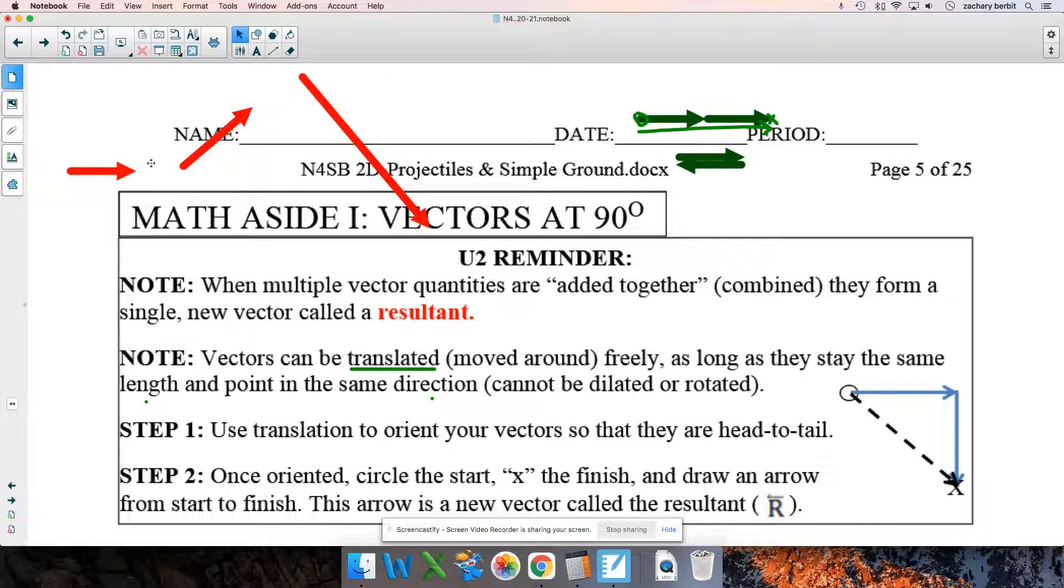For example, these red vectors up here. This one is this long and to the right. You can move it wherever you want, but it better be that long and to the right. Same thing with this one. It's this length. It's a bit longer and up and to the right. Move it wherever you want, but it better stay that length and also pointing up and to the right. So, in this case, with these three, if you wanted to put them together, move them around, head to tail, boom, there's head to tail, and boom, there's head to tail.